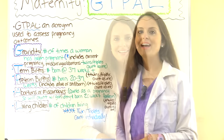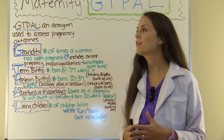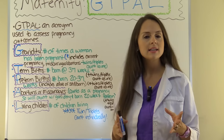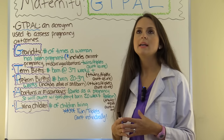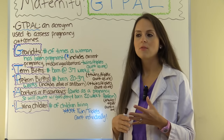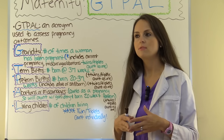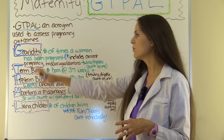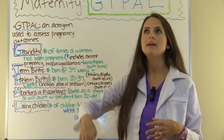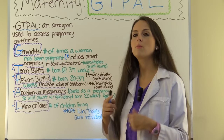First let's talk about what GTPAL is. This is an acronym used to assess pregnancy outcomes. On the NCLEX exam or on your nursing lecture exams, especially in maternity, you will be given a scenario that talks about how the woman is currently pregnant, how many children are living, at how many weeks they were born, and if she's had any miscarriages or abortions. You have to calculate her GTPAL and select the correct option. I'm going to go over this and then work some problems to show you how to do it.